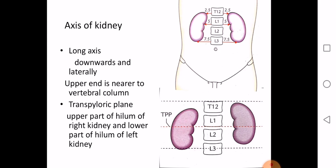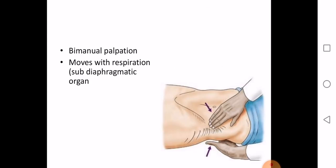From the diagram, you can see the red dotted line representing the transpyloric plane. It passes through the upper part of the hilum in the right kidney and through the lower part of the hilum in the left kidney. Kidneys are not usually palpable. The kidneys move minimally with regular breathing.